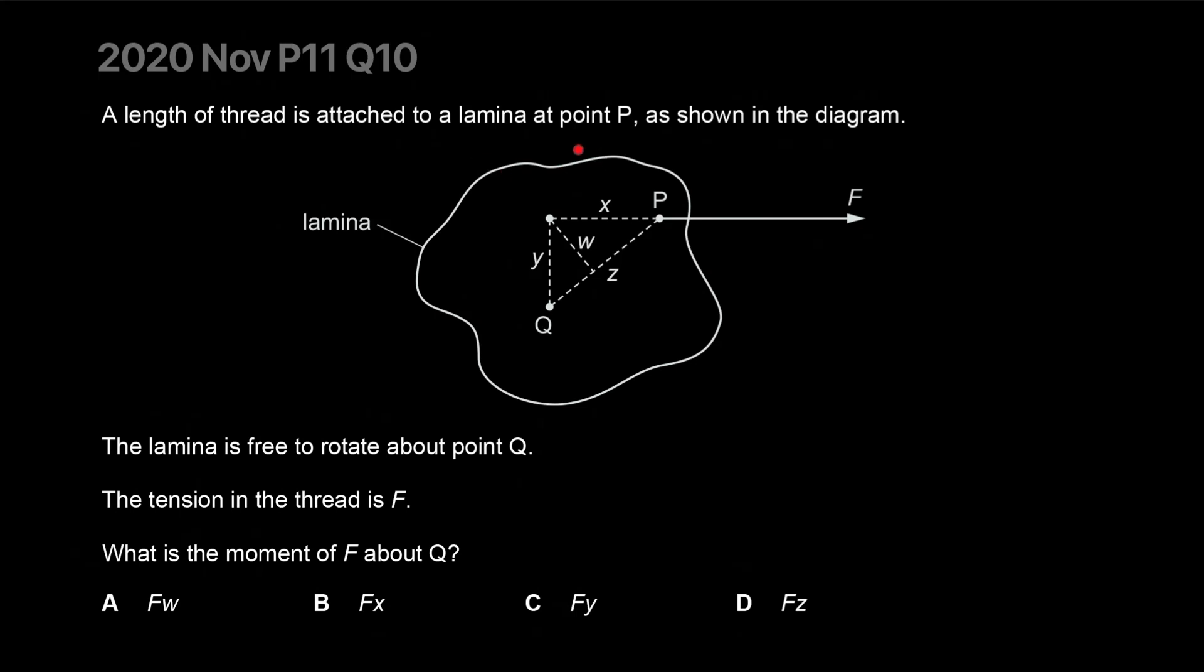A length of thread is attached to a lamina at point P. Essentially this is some big sort of random cardboard thing which is nailed to a wall here, but it's free to rotate, like a badly shaped punkha. On this side they made another hole and put a thread and they're pulling it with force F. You want to figure out what's the moment. You can clearly figure out the moment is going clockwise because you're pulling it that way. But what is the moment?